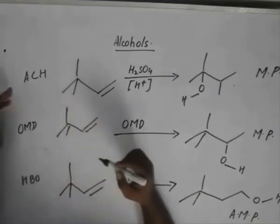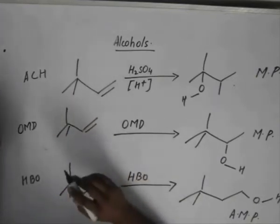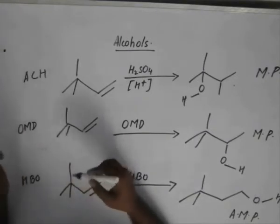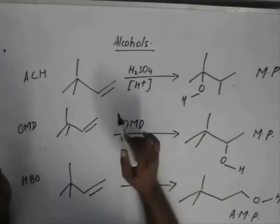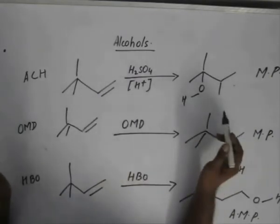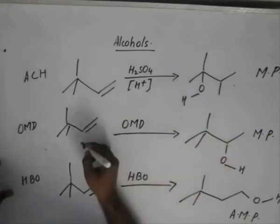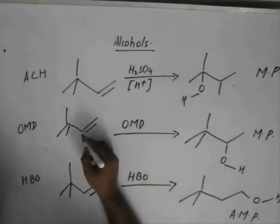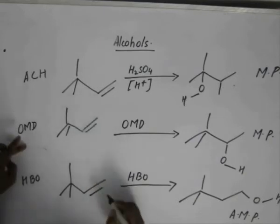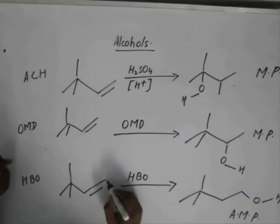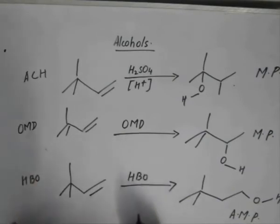But yes, in case of acid-catalyzed hydration, you need to follow each and every step. You have to make the carbocation, you have to rearrange it and then see what the product turns out. But not in the case of OMD and HBO, in which you just attach the OH group with the less number of hydrogen atoms in case of OMD and you attach the OH group to the carbon having more number of hydrogen.